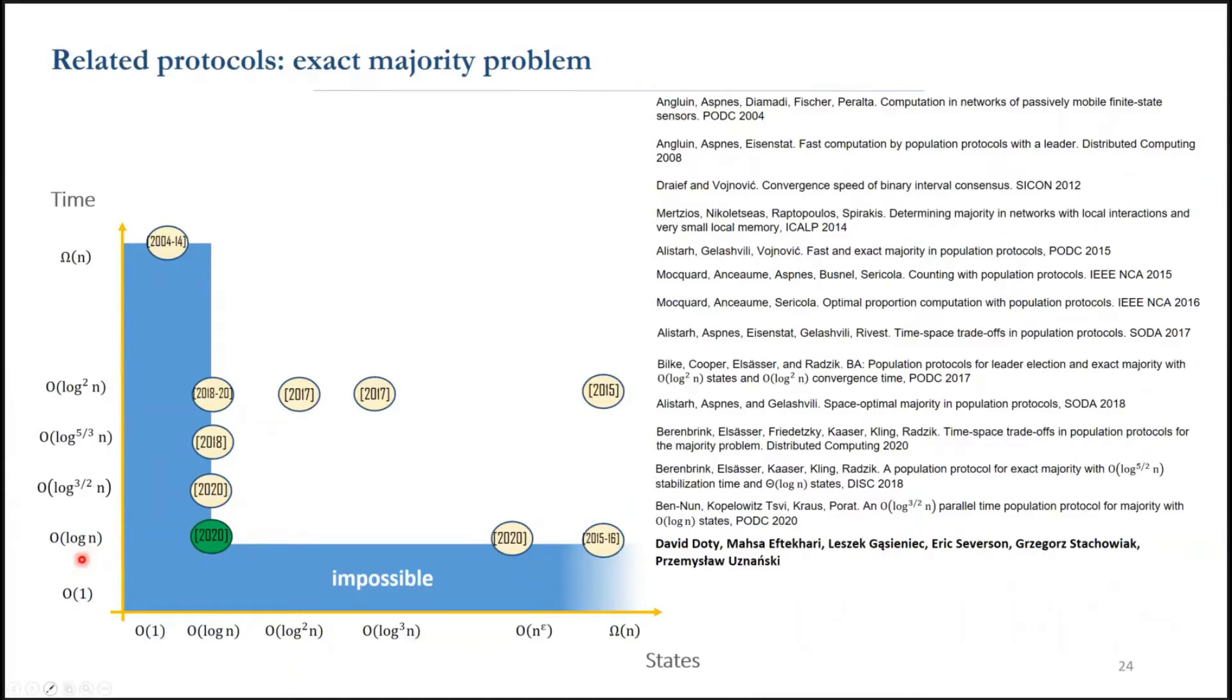This would be exactly a coupon collector problem. How many interactions do we need to sample each agent once? It's n log n, which is equivalent to log n time. So log n is optimal for almost any problem we want to solve, including the majority.